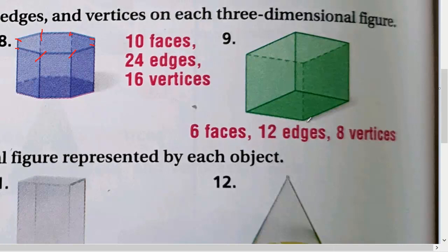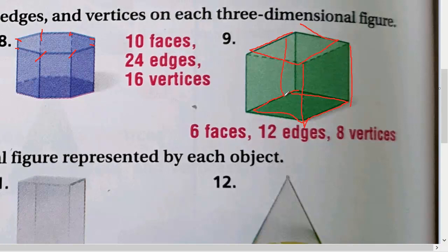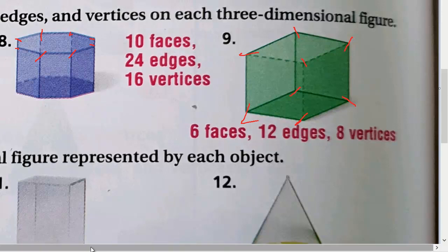Question nine: if the base is a triangle it would be a triangular prism, but here the base is a square so we call it a cube. How many faces? One face up, one face down, and four faces on the sides — six faces. How many edges? Four on top, four on the bottom, and four on the sides — twelve edges. How many vertices? One, two, three, four, five, six, seven, eight — eight vertices.